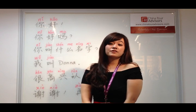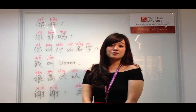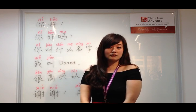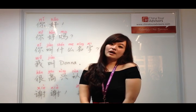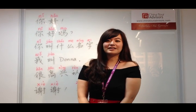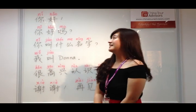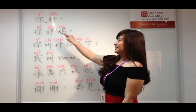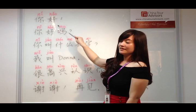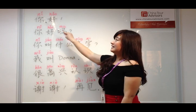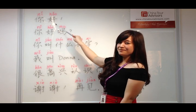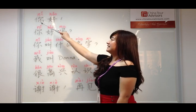The first thing when you meet someone is you obviously want to say hello. So how do we say hello in Chinese? Hello is 你好. Repeat after me: 你好. One last time: 你好.